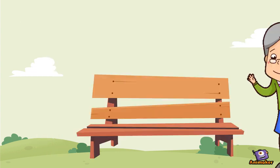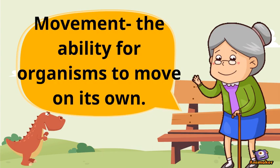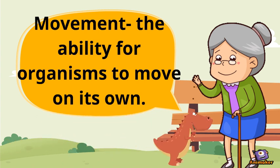Did you know that all living things have seven things in common? Things can only be living if they do all seven of the life processes. M is for movement, which is the ability for an organism to change direction on its own.